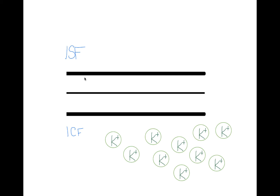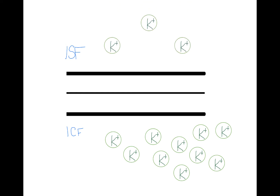Now inside the cell, we only have one solute, and this solute is going to be potassium. And outside the cell, we also only have one solute, and this solute is going to be potassium as well. However, it is important to realize that the concentration of potassium inside the cell is much greater than the potassium concentration outside the cell.